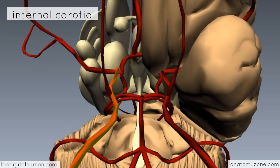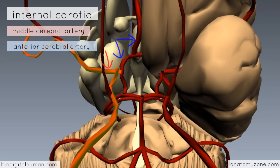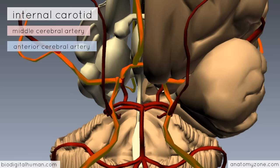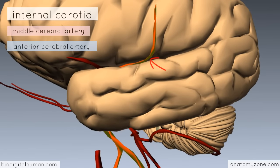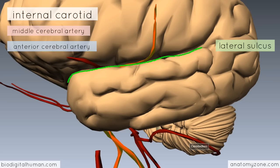The internal carotid artery divides to form the middle cerebral artery and the anterior cerebral artery, highlighted in orange on both sides. Rotating the model around to the lateral view, you can see that the middle cerebral artery runs in the lateral sulcus — the groove separating the frontal and parietal lobes above from the temporal lobe below, also known as the lateral sulcus or lateral fissure. The middle cerebral artery runs within this fissure.